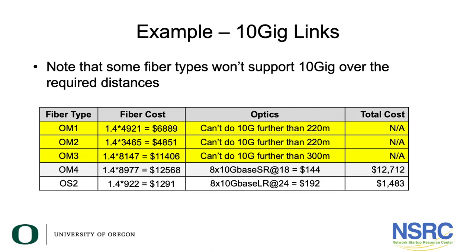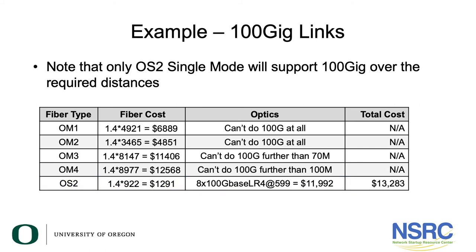If you installed those fiber types and tried to build this network, you simply couldn't do it. OM4 will absolutely support this — it takes eight of the less expensive interfaces at $144, coming to around $13,000 for the optics plus the fiber cable, not including the switch or router. With single-mode fiber, even though the optical interfaces cost more, the installed system cost is much better than using OM4 fiber.